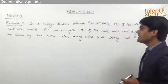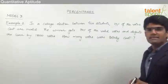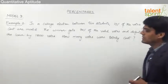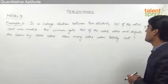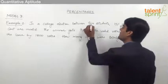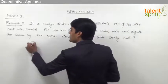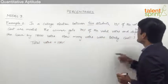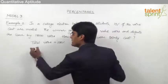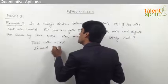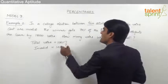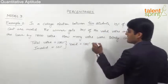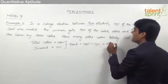The second example: in a college election between two students, 10% of the votes cast are invalid. The winner gets 70% of the valid votes and defeats the loser by 1800 votes. How many votes were totally cast? Assume total votes cast equals 100%. Since 10% of votes are invalid, the valid votes equal 100% minus 10%, which comes out to be 90%.